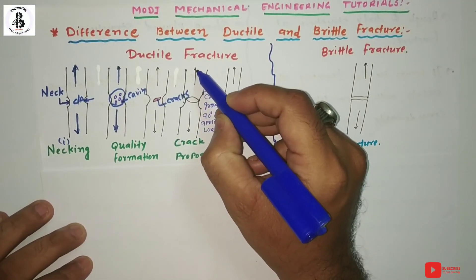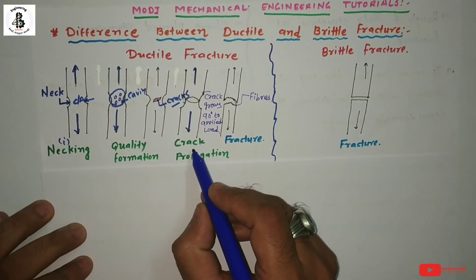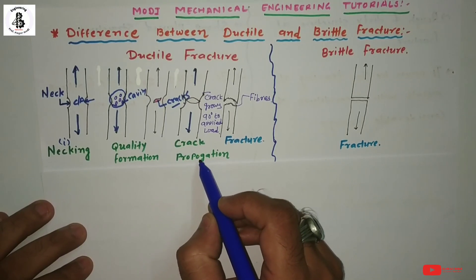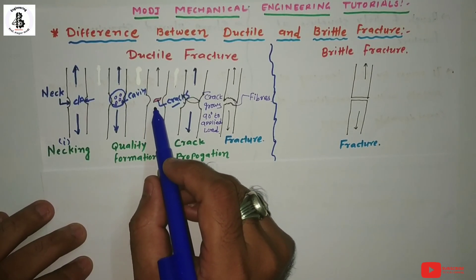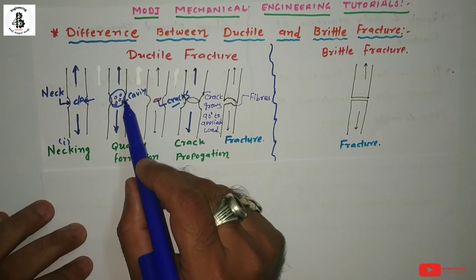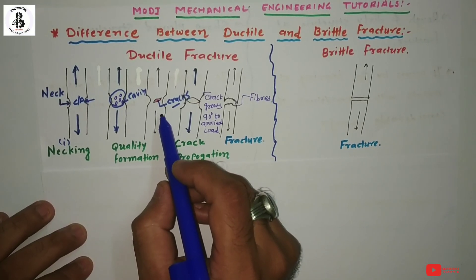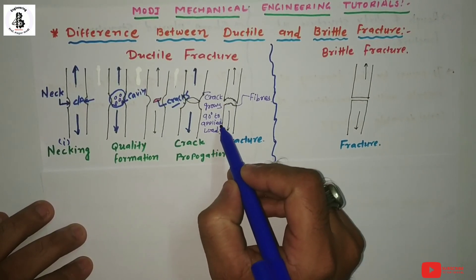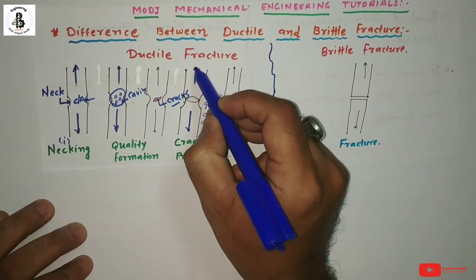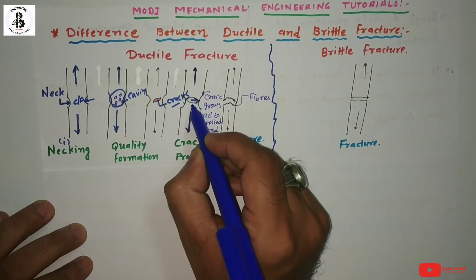With continued application of tensile load, these cracks propagate — the next step is crack propagation. Once a cavity forms into the necked area, that is the starting point of fracture in ductile materials. The cavities convert into cracks, which then propagate. Generally the crack grows at a 90-degree angle to the applied load — so the crack propagates perpendicular to the direction of the applied load.